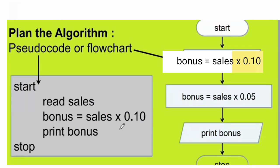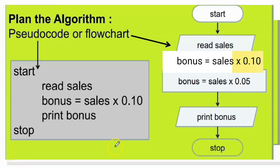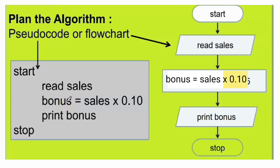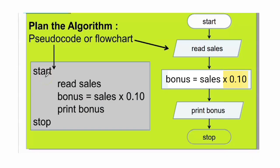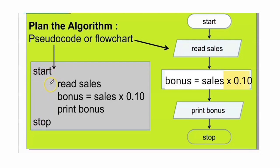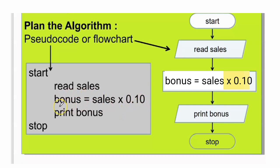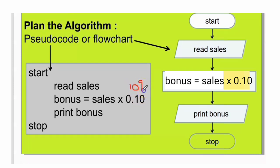Step two: plan the algorithm. For pseudocode, you start with 'start' or 'begin' and end with 'stop' or 'end'. Then write 'read sales'. The formula for the process is: bonus equals sales multiplied by 0.10. Do not write 10% — you cannot write it that way in pseudocode. Then write 'print bonus'.